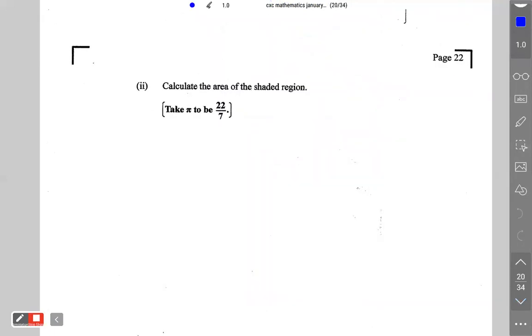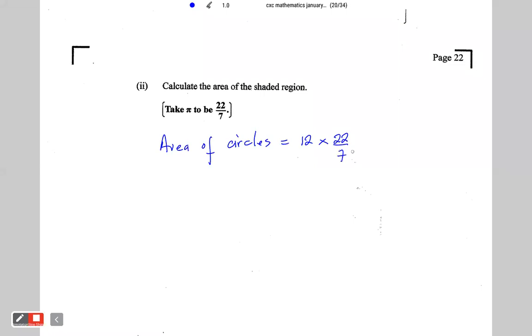Let's move on. Next, we're asked to calculate the area of the shaded region. Well to get the area of the shaded region we have to first find the area of the 12 circles. The circles are exactly the same so all we need to do is to find the area of one and then multiply it by 12. So area of circles would be equal to 12 multiplied by pi r squared which is 22 over 7 times 7 over 1.